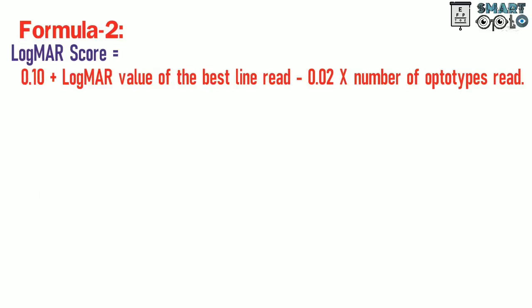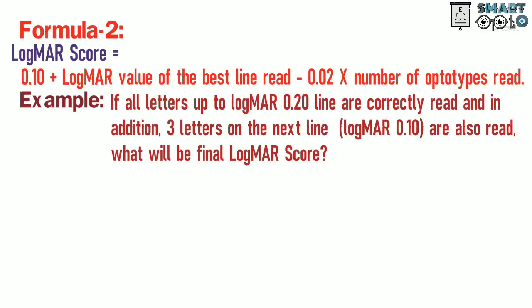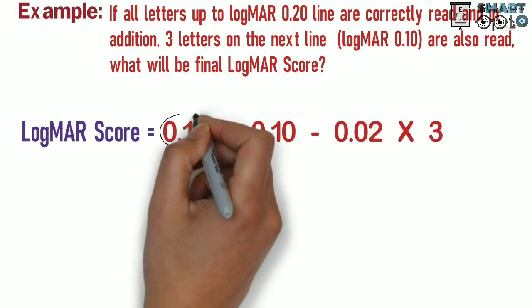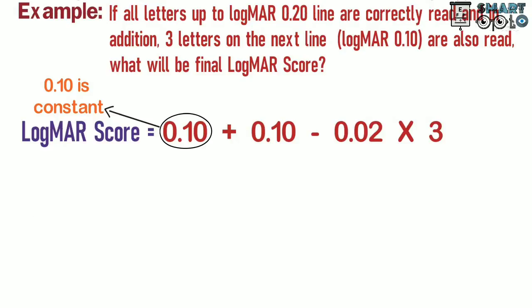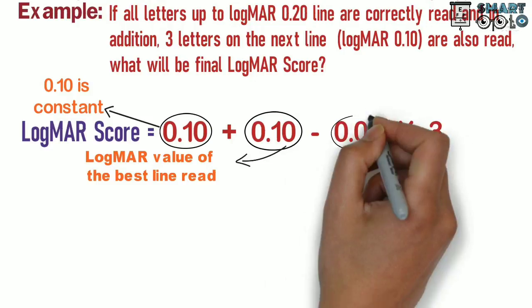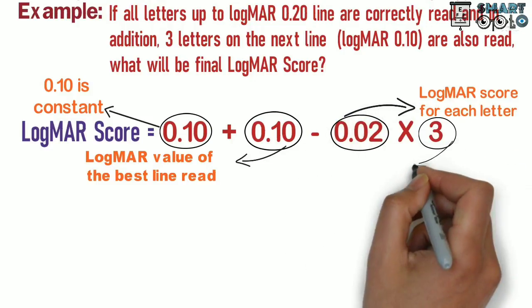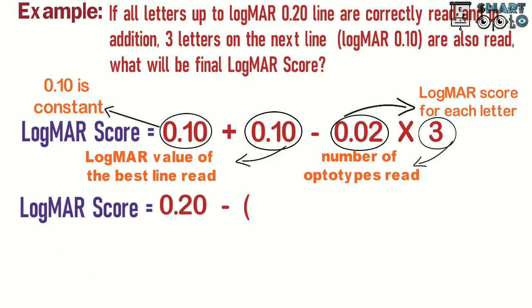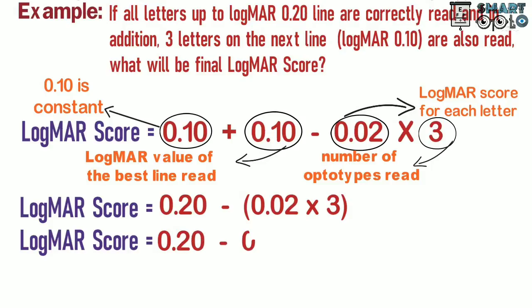Formula 2: LogMAR score = 0.10 + (LogMAR value of the best line read) − (0.02 × number of optotypes read). For example, if all letters up to LogMAR 0.20 are correctly read and three letters on the next line (LogMAR 0.10) are also read, then LogMAR score = 0.10 + 0.10 − (0.02 × 3) = 0.20 − 0.06 = 0.14 LogMAR.